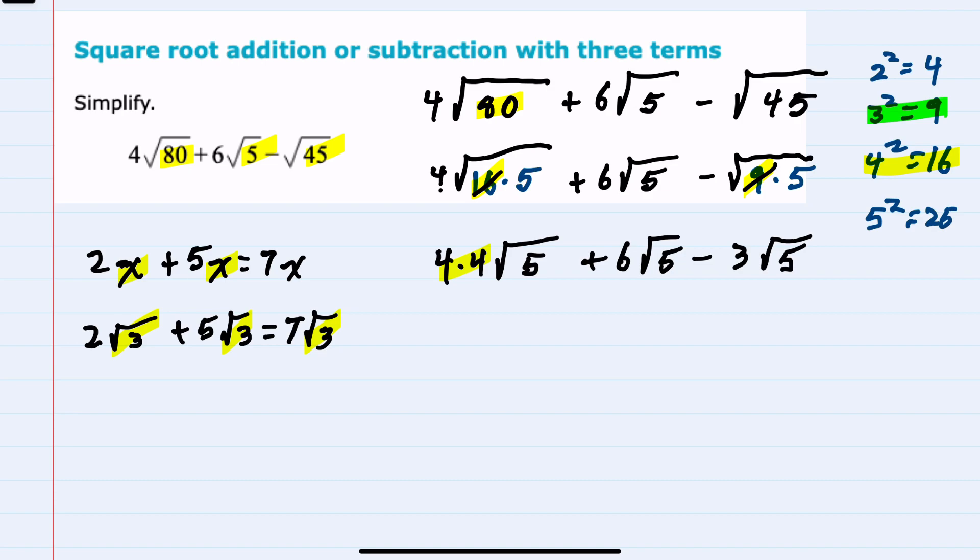Doing this multiplication, I now have 16√5 + 6√5 - 3√5.